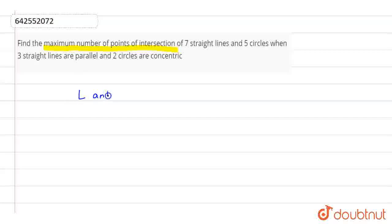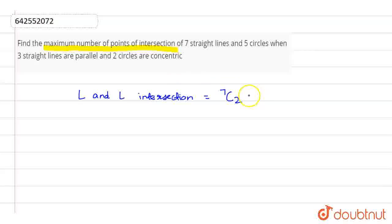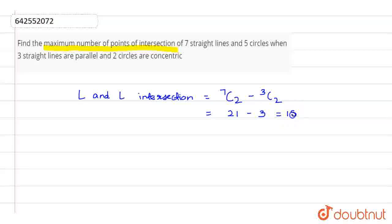For line and line intersection: we have 7 lines total, and for intersection we consider 2 lines, so it is 7C2. But we also have 3 straight lines which are parallel, so we have to subtract those conditions — we minus 3C2. That gives us 21 minus 3, which equals 18.